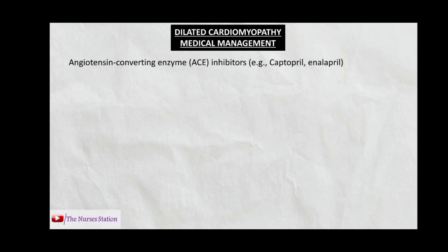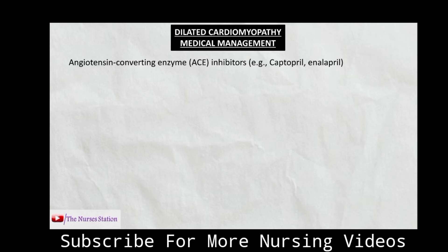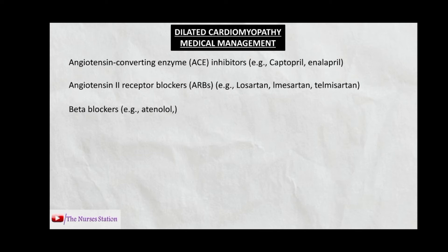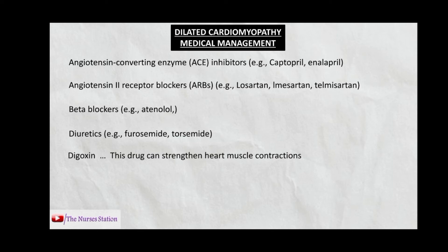Medical management of dilated cardiomyopathy includes: ACE inhibitors, which cause vasodilation to lower blood pressure and decrease cardiac workload; angiotensin 2 receptor blockers as alternatives to ACE inhibitors; beta blockers like atenolol, which slow heart rate and blood pressure; diuretics for fluid retention such as generalized edema, pulmonary edema, or ascites; digoxin, which strengthens heart muscle contractions and improves cardiac output; and anticoagulant therapy such as heparin or warfarin when there are increased chances of thrombi formation in dilated ventricles.